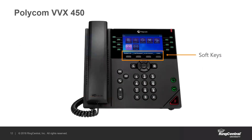Moving on, these are the soft keys. They change state depending on the state of the phone. They'll show four different things when the phone is idle, and then four additional options when you're on a call.